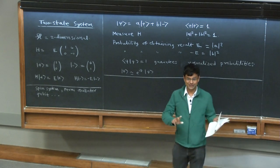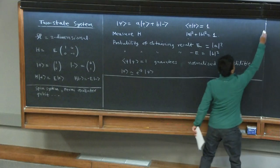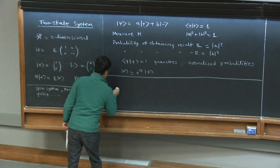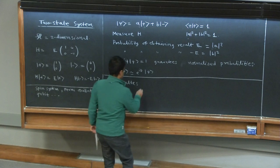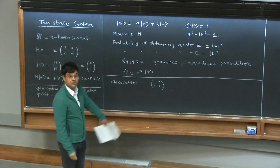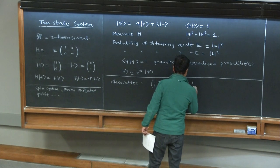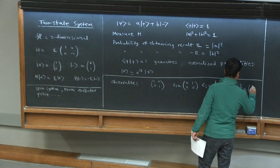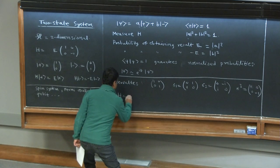Last time we had a 15-minute discussion on this, but it was a bit of a digression. The main ideas are illustrated here. All observables in this system are proportional to real linear combinations of the identity and the Pauli matrices: σ₁, σ₂, and σ₃. Our Hamiltonian is nothing but E times σ₃.